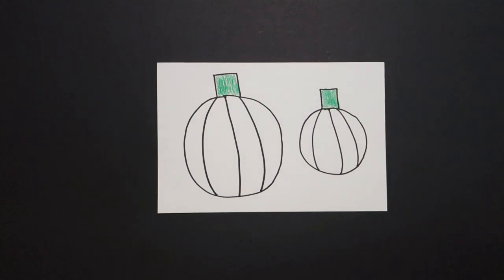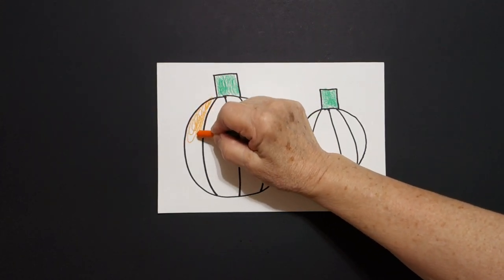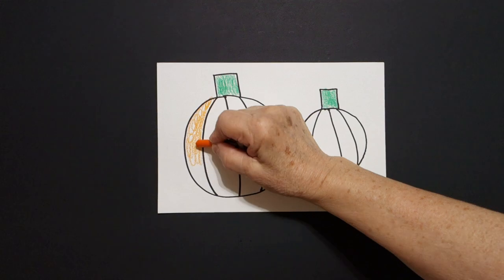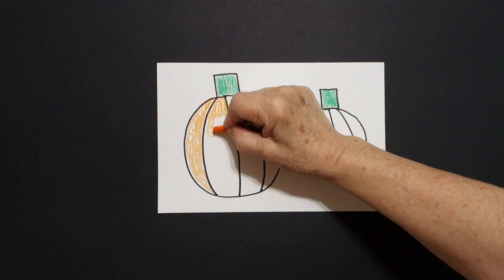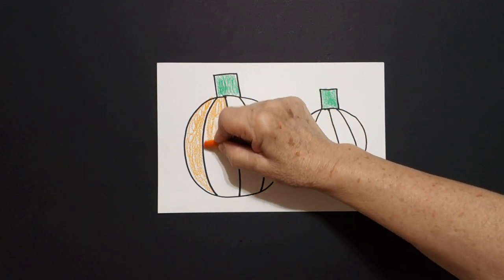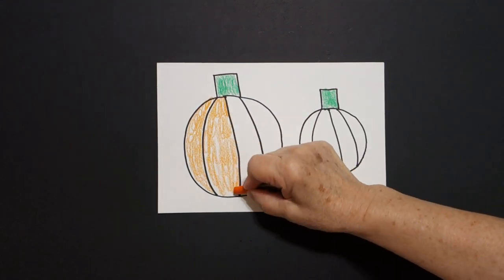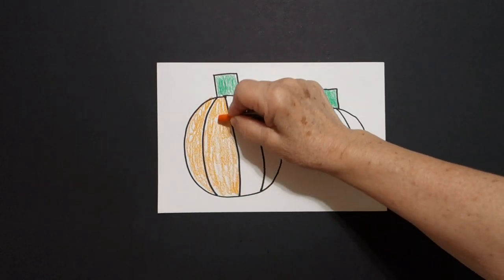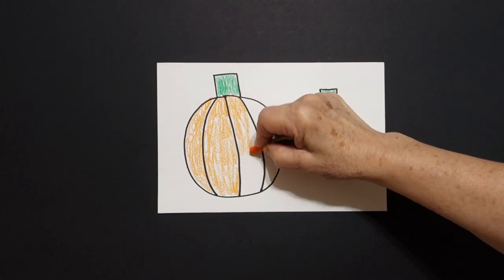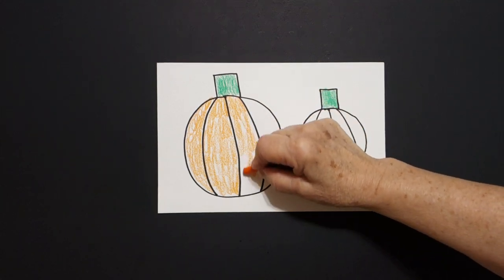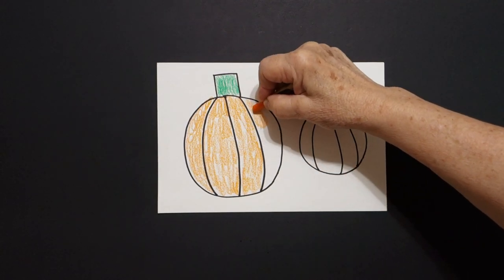Next, I take my orange and each one of these spaces I'm going to color inside orange. Now, if you color each section, it goes a lot easier than if you try to color all of the sections all at one time. So work your way down, work your way up, jump to the next space, work your way down, work your way up, and fill in all of that space.